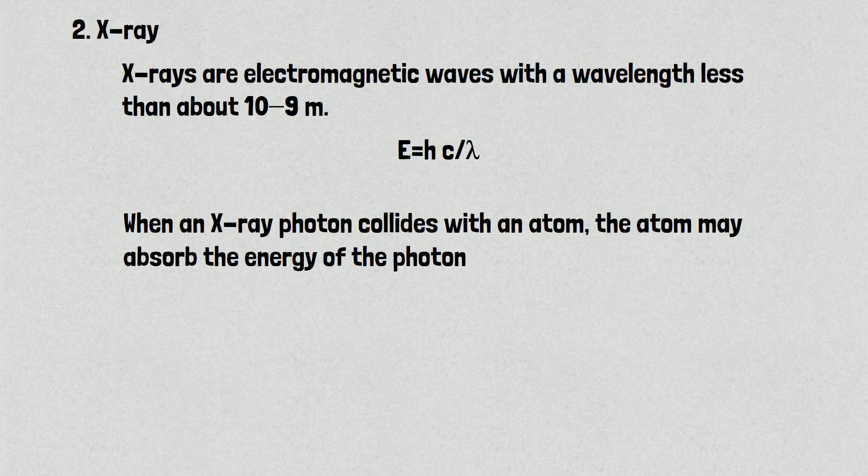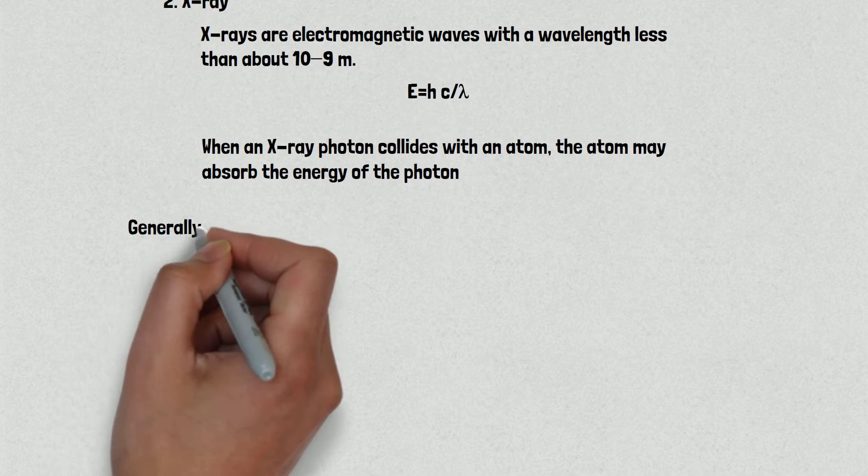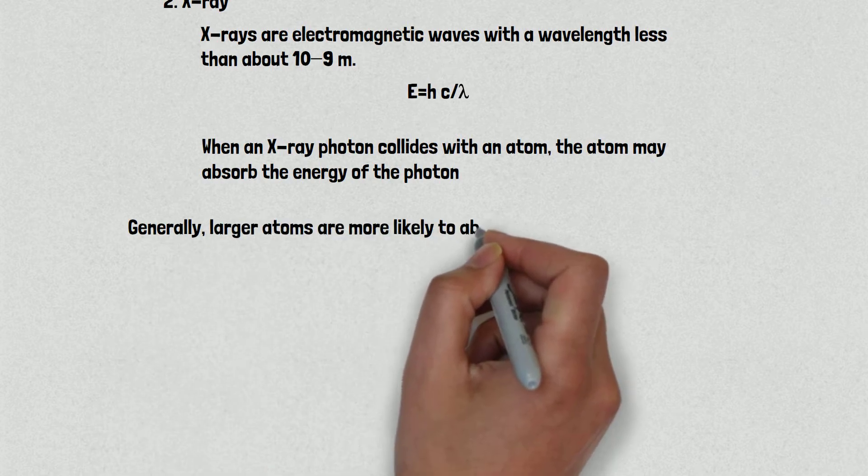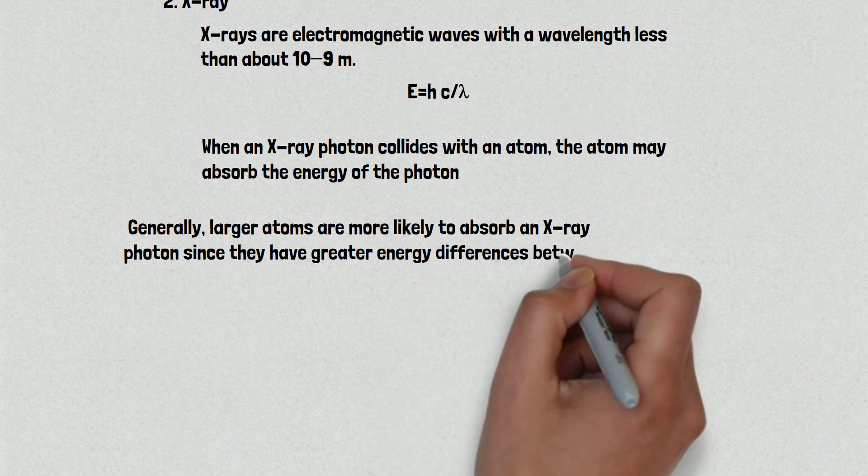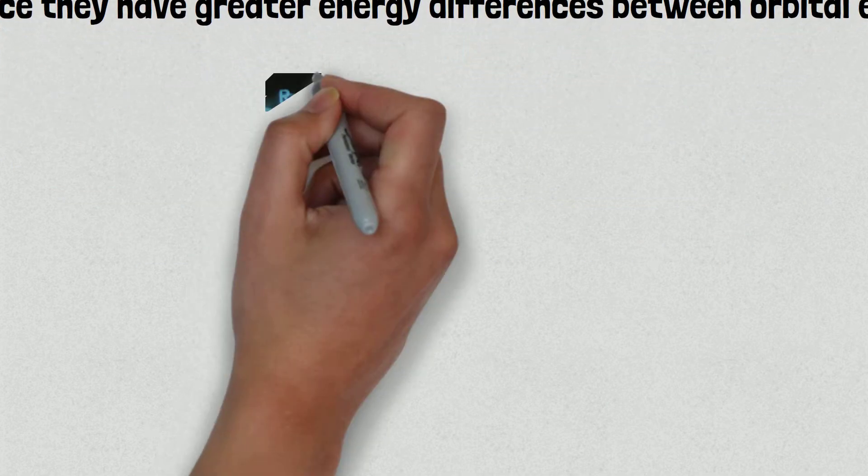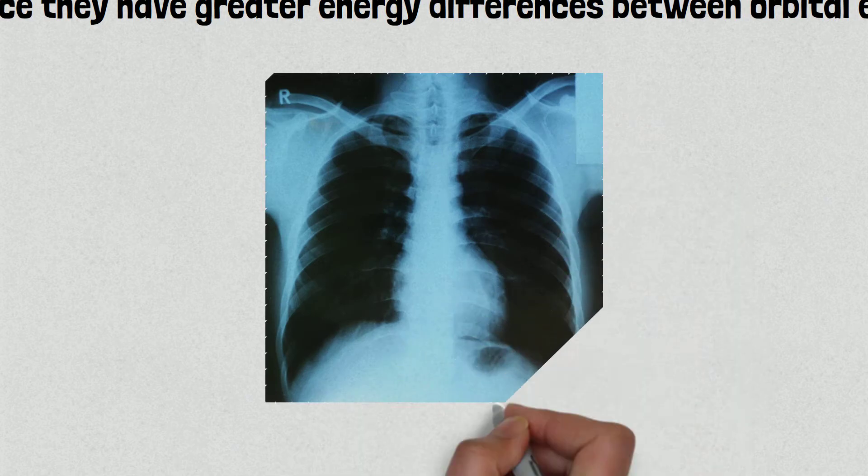Generally, larger atoms are more likely to absorb an x-ray photon since they have greater energy differences between orbital electrons. The soft tissue in the human body is composed of smaller atoms than the calcium atoms that make up bone, so there is a contrast in the absorption of x-rays.